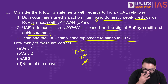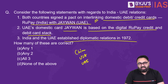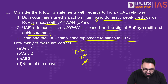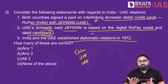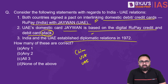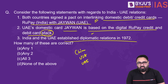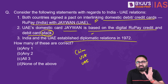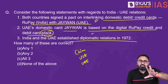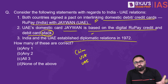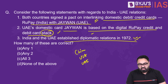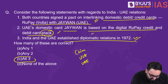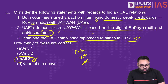Statement one is correct — Rupay card has been interlinked with Jaivan; Rupay is launched by NPCI, which also runs UPI. Statement two is also correct — a stack refers to the algorithm or code that can be replicated; NPCI made the UPI stack open so companies like Paytm, PhonePe, and Google Pay can use it. Similarly, UAE's Jaivan is based on that digital stack. Statement three is also correct — diplomatic relations were established in 1972. The answer is C — all three statements are correct.